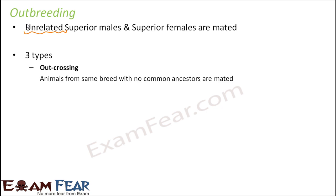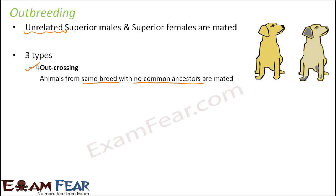The first type is outcrossing, where animals belong to the same breed but do not share any common ancestor — that is how they are unrelated. For example, these two dogs belong to the same breed but do not share the same ancestors, so the similarities between them will be less than between two dogs that do share common ancestors.